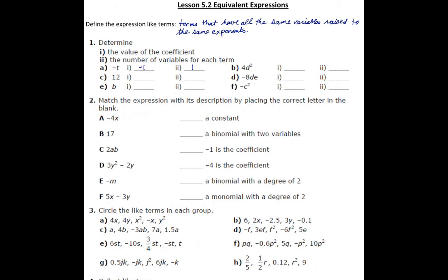Next, we have 12. The number 12 has a coefficient of 12 and the number of variables it has is 0. The next one, part e, we can see that b has a coefficient of 1. Again, with a coefficient of 1, we don't write that 1 out in front — just leave it blank; that's understood to be 1. The number of variables here is 1.